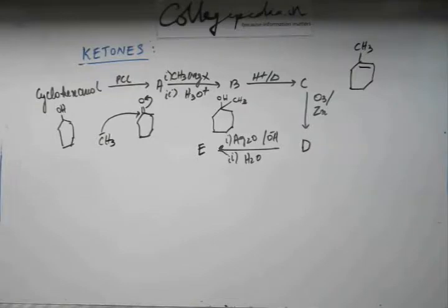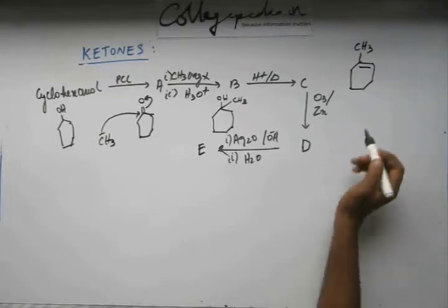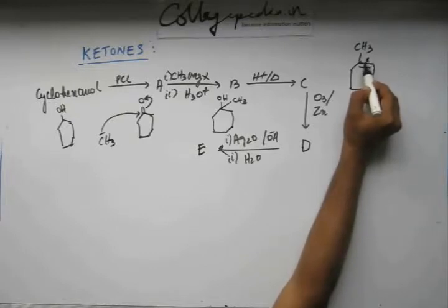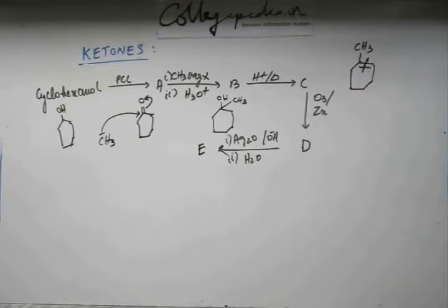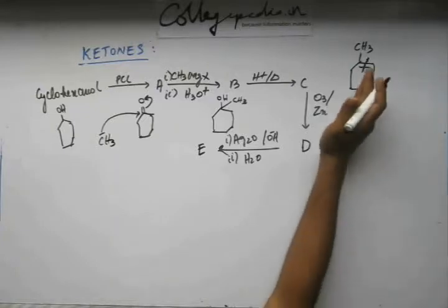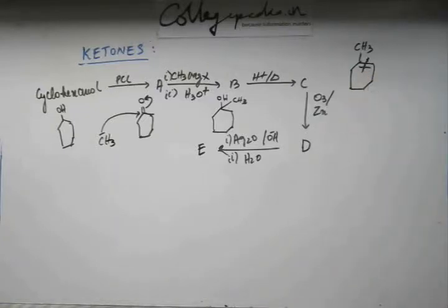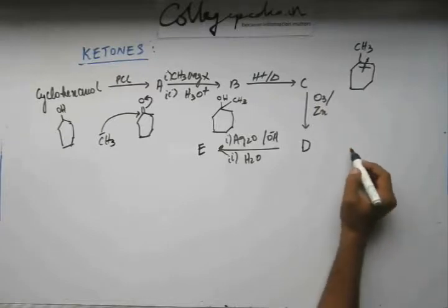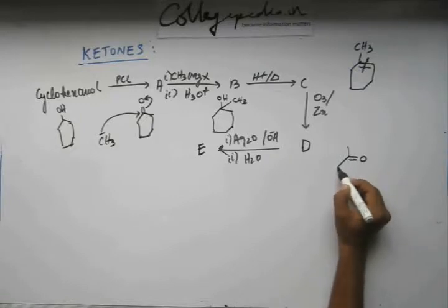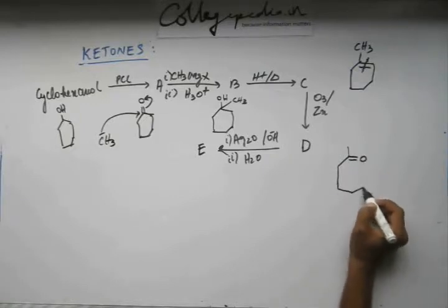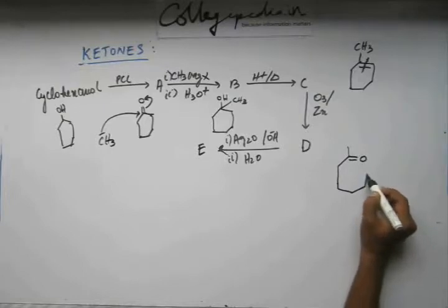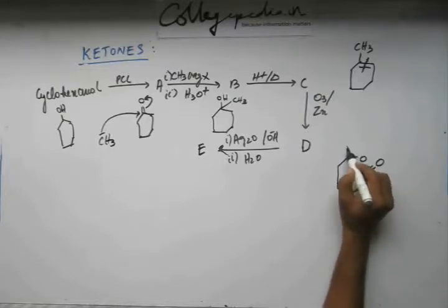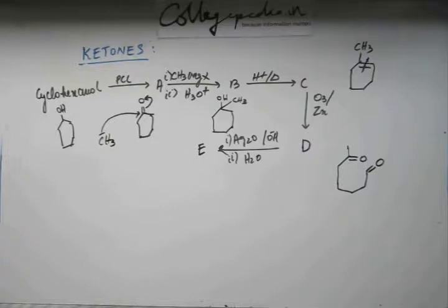Now once you have identified C, you are carrying out reductive ozonolysis. And you know what happens in ozonolysis. We have studied this reaction in great detail. Ozonolysis breaks C double bond C like this. Both the carbons that were previously engaged in making C double bond C will now be making C double bond O. So what D would be, D would be something like this. This is what D is.